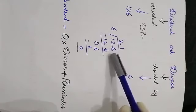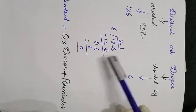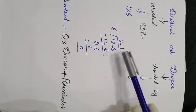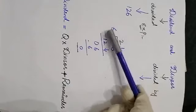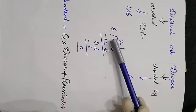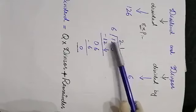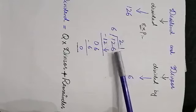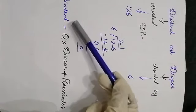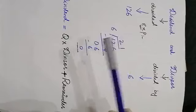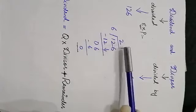In multiplication you start from the ones place, but in division you start from the hundreds place. In 126: 1 is at the hundreds place, 2 is at the tens place, and 6 is at the ones place. Now, how can we find the dividend? By the formula: quotient multiplied by divisor, plus remainder, equals the dividend.